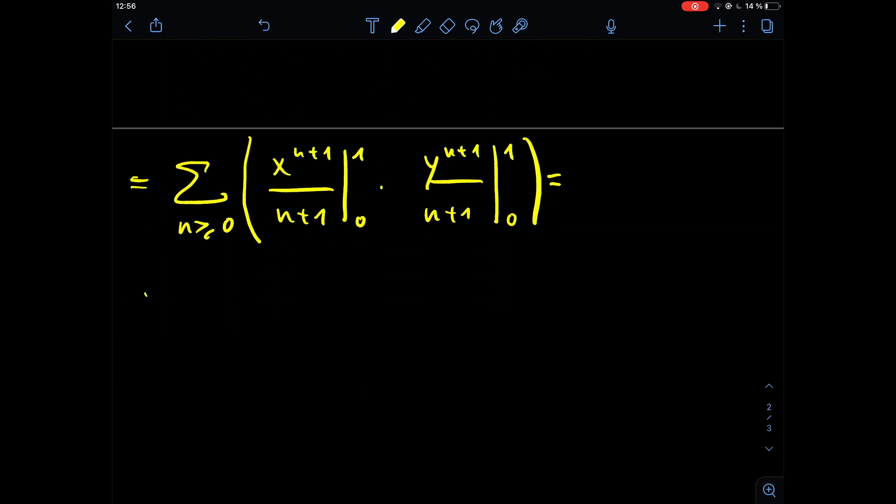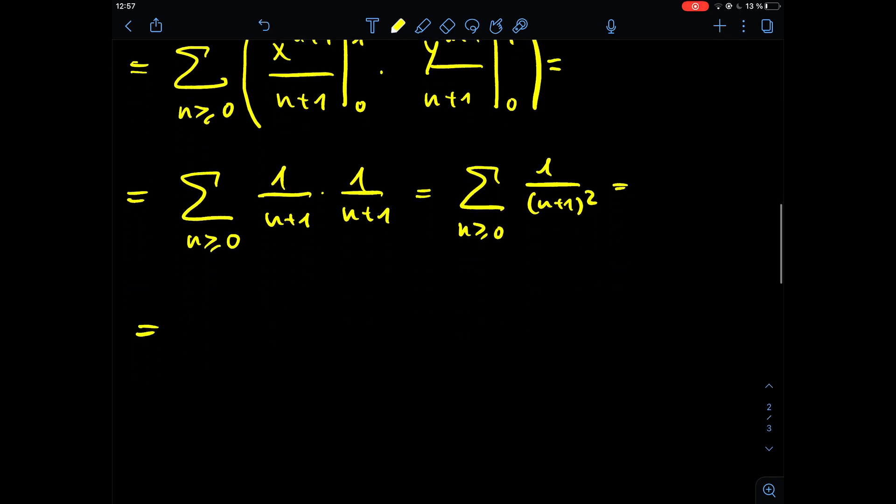So this in the end gives us the sum from all n being greater or equal than 0, and then we plug in 1 and 0 into the two functions dependent on x and y, and then we get like 1 divided by n plus 1 times 1 divided by n plus 1. And this is simply 1 divided by n plus 1 squared. And if we shift the index of our sum 1 forward so it starts at 1 and not at 0, we will get the sum over all inverse squareds.